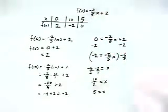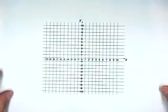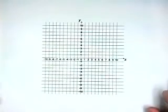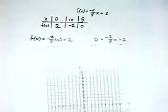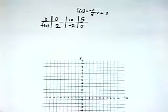So when y or f of x is 0, x is 5. Now we have three ordered pairs that we can plot in a coordinate system and connect to get the graph of a line. Here's our coordinate system. We need to plot the points 0, 2, 10, negative 2, and 5, 0.